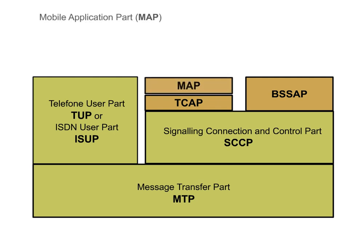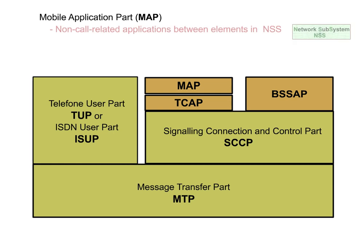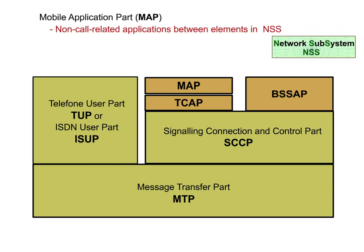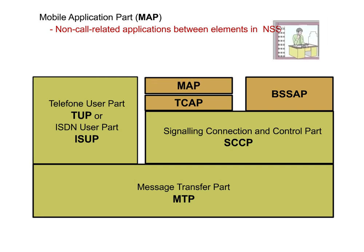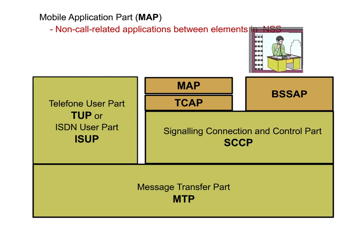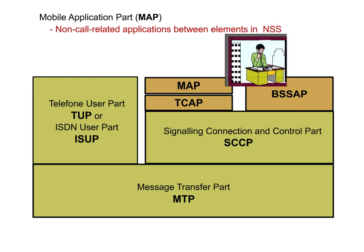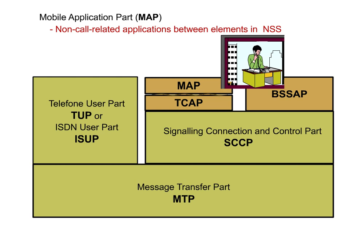The mobile application part, MAP, is a GSM-specific protocol for non-call-related applications between elements in the NSS. MAP resides directly on top of TCAP, which can be used as a secretary's office by the MAP, and which coordinates and guarantees a smooth MAP communication.